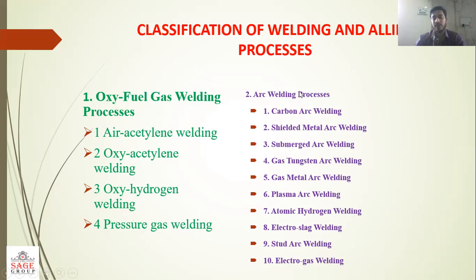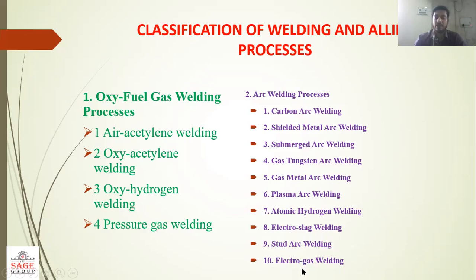Next, arc welding process is another classification. In arc welding there are several types: carbon arc welding, shielded metal arc welding, submerged arc welding, gas tungsten arc welding (TIG), gas metal arc welding (MIG), plasma welding, atomic hydrogen welding, electro-slag welding, stud arc welding, and electro-gas welding.